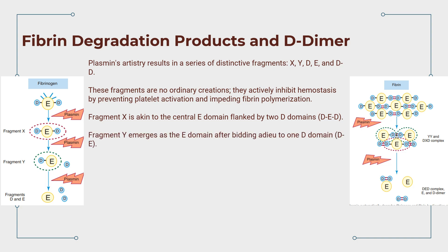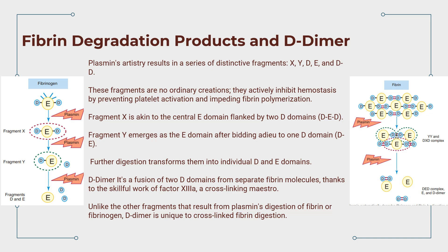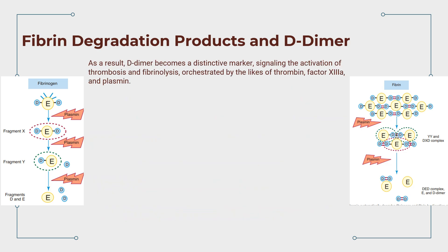Further digestion transforms the fragments into individual D and E-domains. Among these, D-dimer stands out — it's a fusion of two D-domains from separate fibrin molecules, thanks to the work of factor XIIIa, a cross-linking enzyme. Unlike other fragments that result from plasmin's digestion of fibrin or fibrinogen, D-dimer is unique to cross-linked fibrin digestion, becoming a distinctive marker signaling the activation of thrombosis and fibrinolysis orchestrated by thrombin, factor XIIIa, and plasmin.